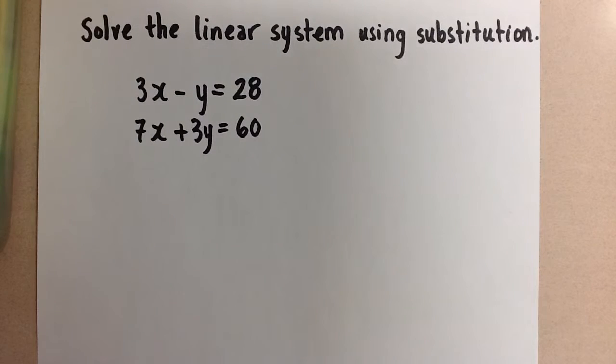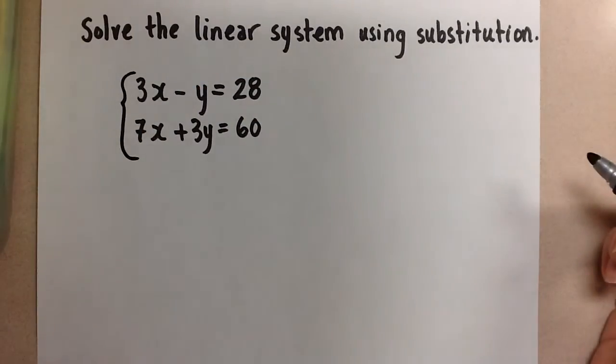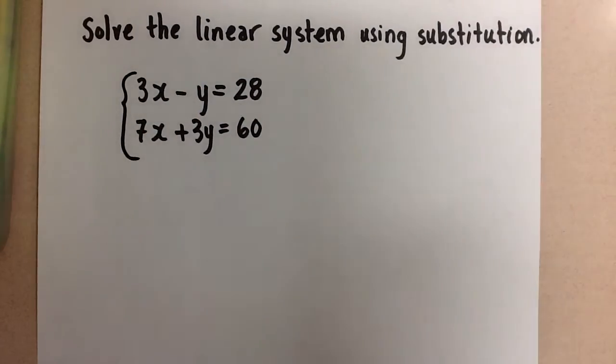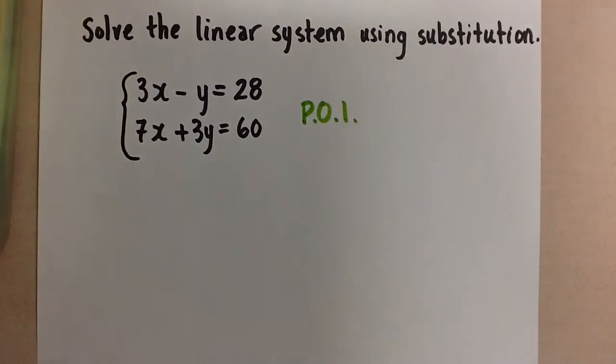Hi guys, Mrs. A here. We are going to solve this linear system using substitution. Now what it means to solve the linear system is to find the point of intersection between these two lines. So that is the point at which they cross. So that's what we're going to find, and we're going to use the method of substitution.